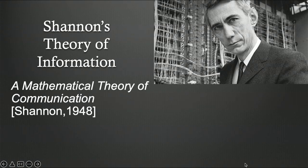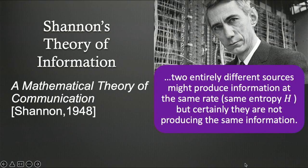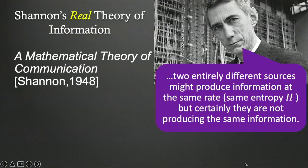Shannon's theory of information is from this famous paper, 150,000 citations. Can you get that? Wow. It's actually not a theory of information, as you can see from the title. In fact, it's a theory of communication, and it's not about actual information. In fact, one could say that, generally, if you have two sources of information which produce information at the same rate, at the same entropy, that doesn't mean they're producing the same information.